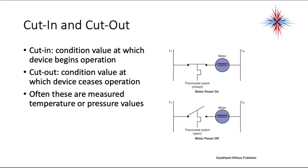We have two terms we need to know for control systems: cut in and cut out. Cut in is the condition value at which a device begins operation — the temperature at which the thermostat closes and the motor powers on. Cut out is the condition value at which a device ceases operation — the temperature at which the thermostat opens and the motor shuts down. These are often measured temperature or pressure values, and every control device has a cut in and a cut out, unless it's manual.